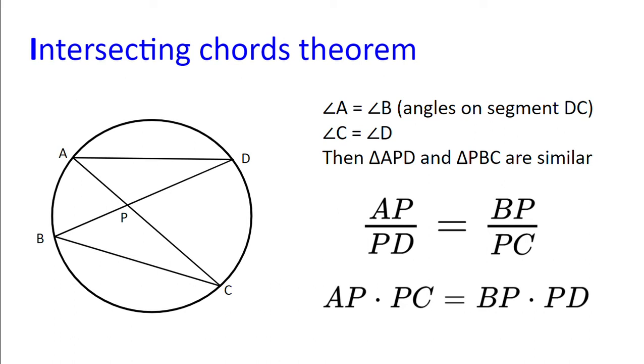From this, we can find AP multiplied by PC equals BP multiplied by PD.